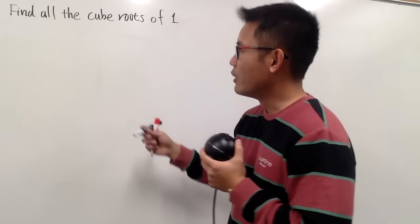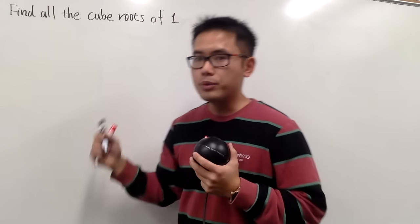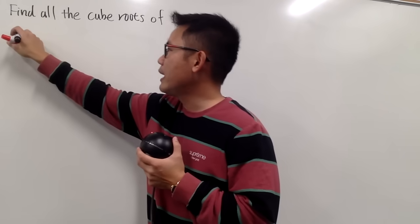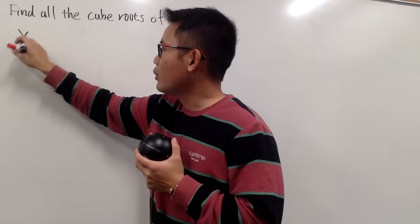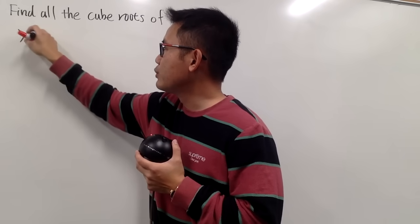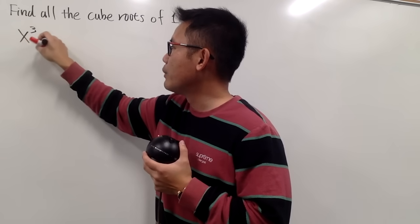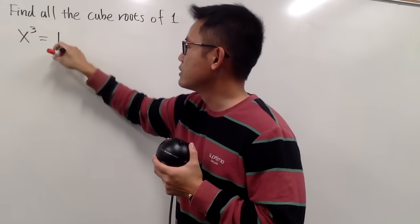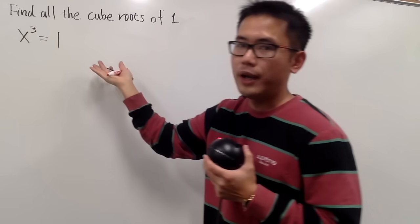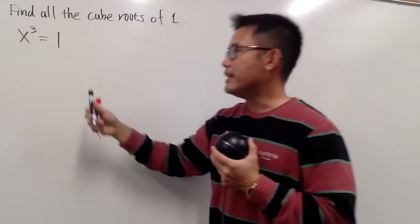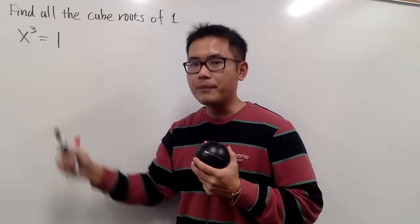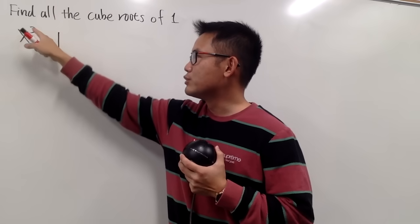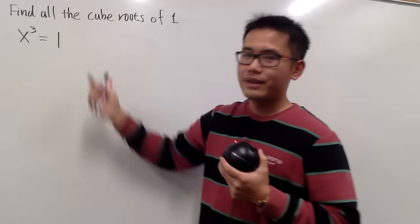Here we go. To find the cube root of a number, I want to have a number x so that when I raise that to the third power, I will end up with the number I'm looking for, namely 1. So we'll have to solve this equation. And as I mentioned earlier, 1 is definitely a solution for this, because 1 to the third power is equal to 1.